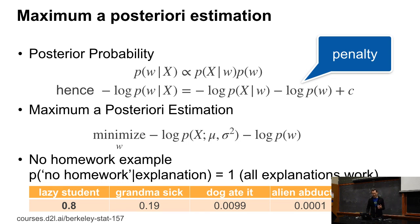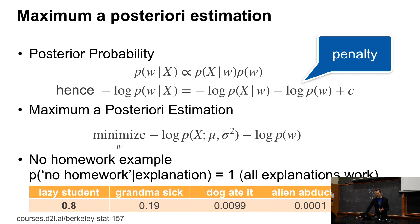Think about lazy student vs. sick grandma vs. dog vs. alien abduction near Area 51. Let's say alien abduction has probability 0.01%, dog eats homework about 1%, sick grandma about 20%, and laziness 80%. The posterior probability via Bayes' rule is: p(W|X) ∝ p(X; W) · p(W) — the likelihood times the prior probability of that parameter being reasonable.